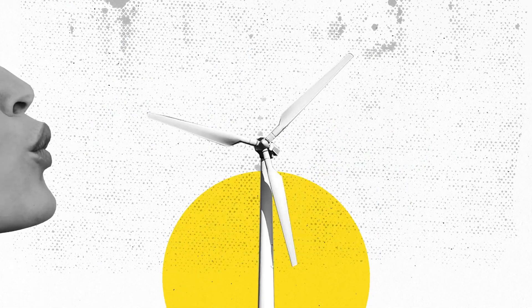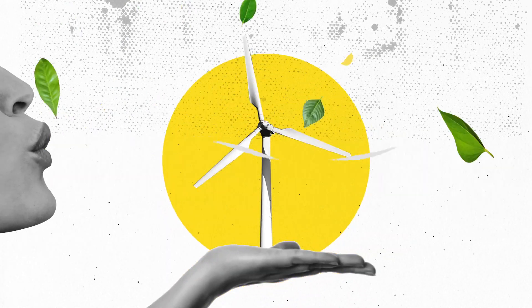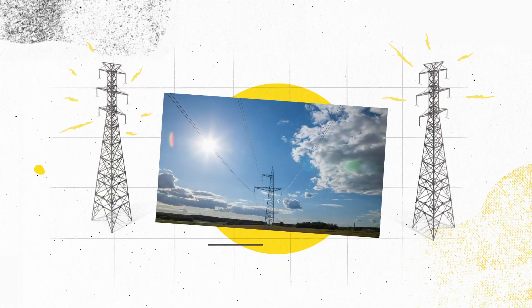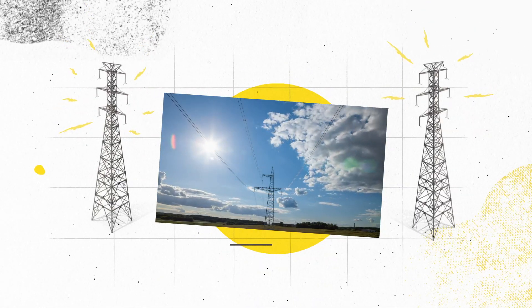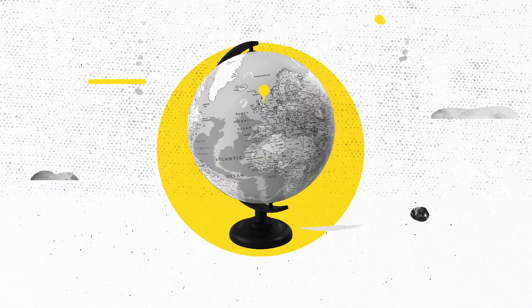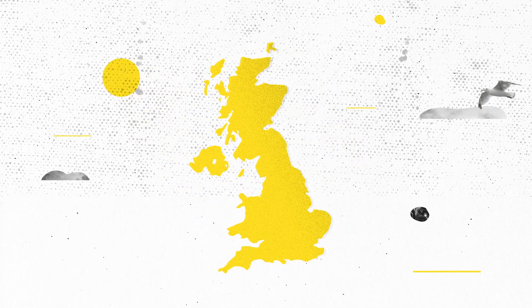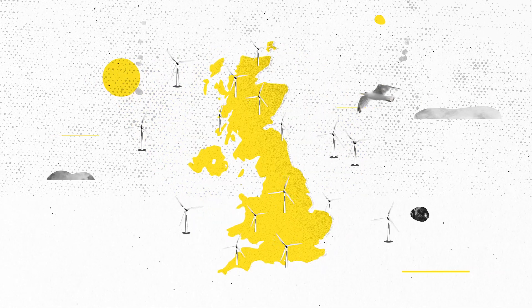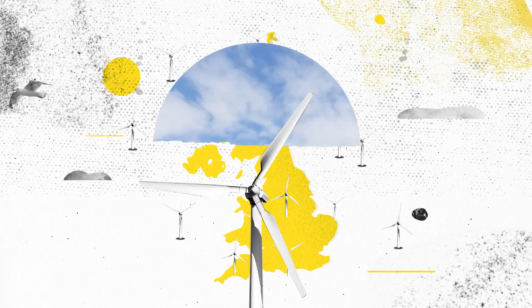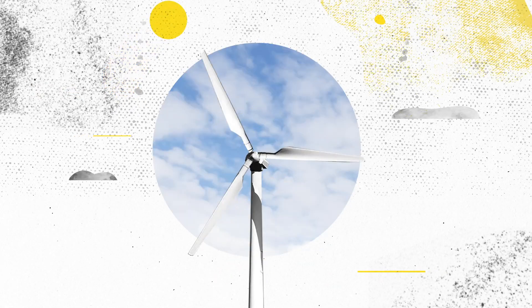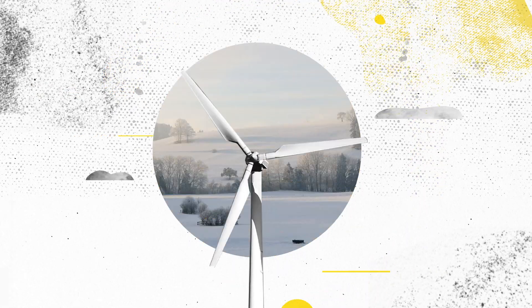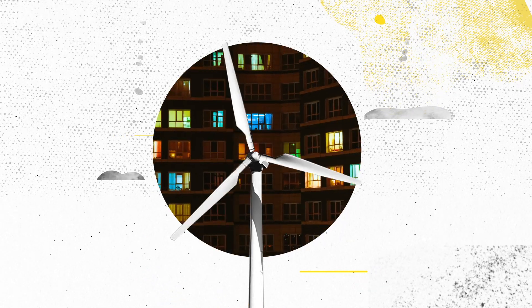The generator converts the energy from the wind into green, renewable electricity that feeds into the grid. The UK's location makes it particularly windy. 40% of Europe's wind blows across our small group of islands. The wind blows all year round and is especially reliable during winter when we use more electricity.